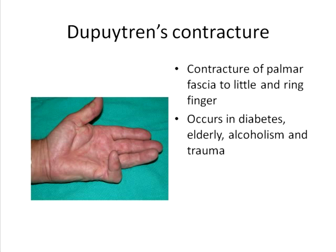Dupuytren's contracture is a contracture due to fibrotic changes in the palmar fascia, attached to the little and ring fingers, leading to flexion deformity of the fingers. It can occur in many conditions, including alcoholism, with increasing age, and following trauma. It is associated with alcohol intake and may not indicate liver involvement, but chronic alcohol intake is believed to cause pro-fibrotic changes leading to this contracture.